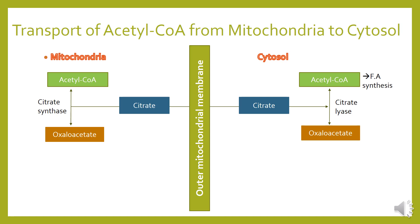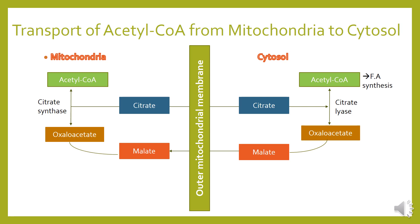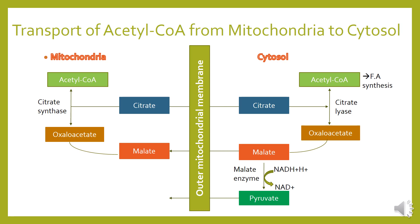The oxaloacetate can be converted to malate. Now there are two possibilities: either malate directly enters mitochondria where it will further convert back to oxaloacetate, or malate is converted by malic enzyme to pyruvate through dehydrogenation — NADH is produced — and pyruvate then re-enters mitochondria where it converts back to malate.